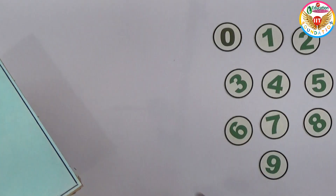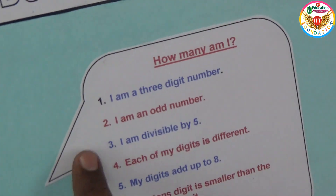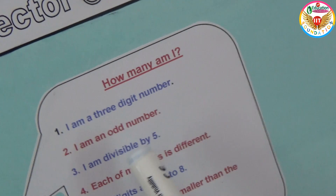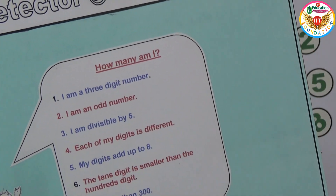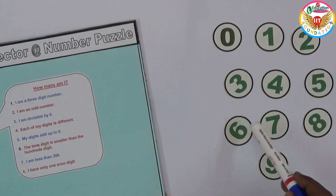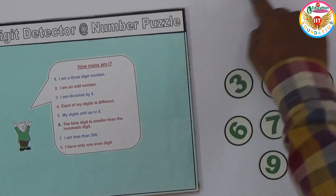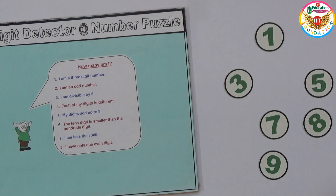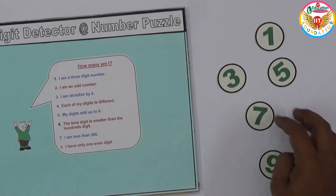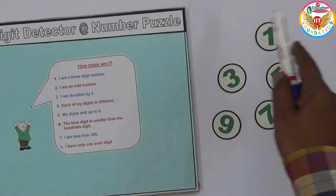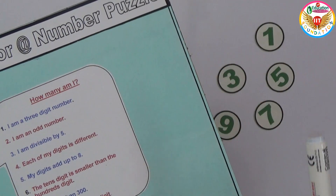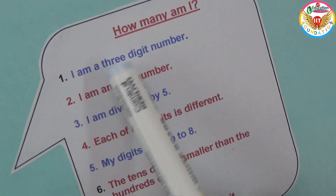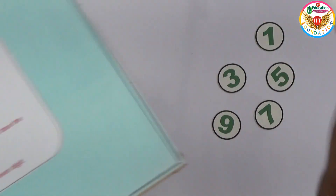Out of these digits, we don't yet know which three to pick. The next clue says I am an odd number. For an odd number, the units place must be an odd digit — that is, either 1, 3, 5, 7, or 9. So we remove 0, 2, 4, 6, and 8. The last digit must be among the odd digits.